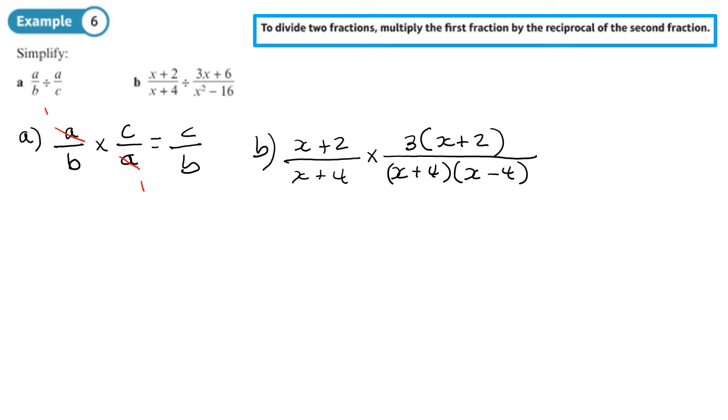Ah, I just realized I haven't flipped the fraction. So let's write that as divide. And then we'll flip it. So X plus 2 over X plus 4 times by X plus 4, X minus 4, and then 3, and then X plus 2.